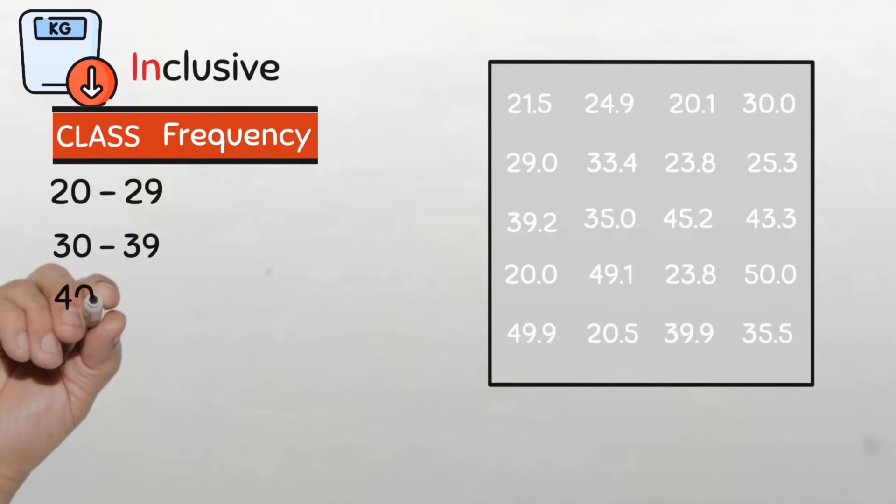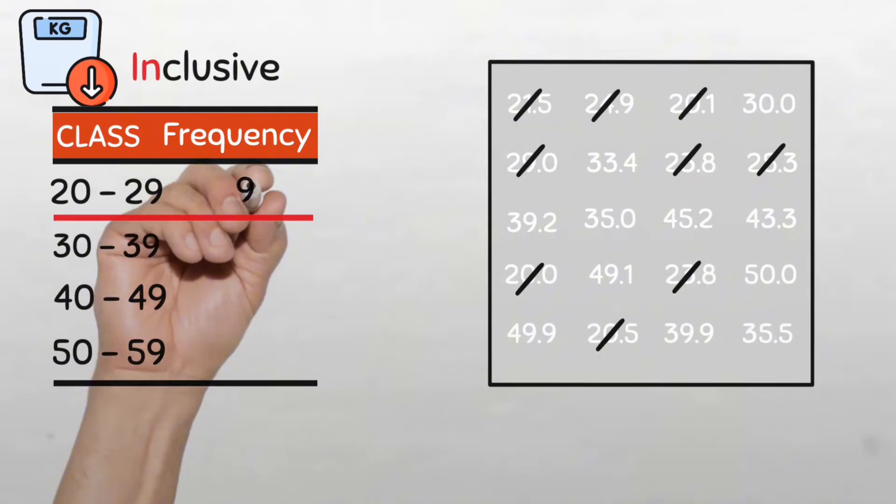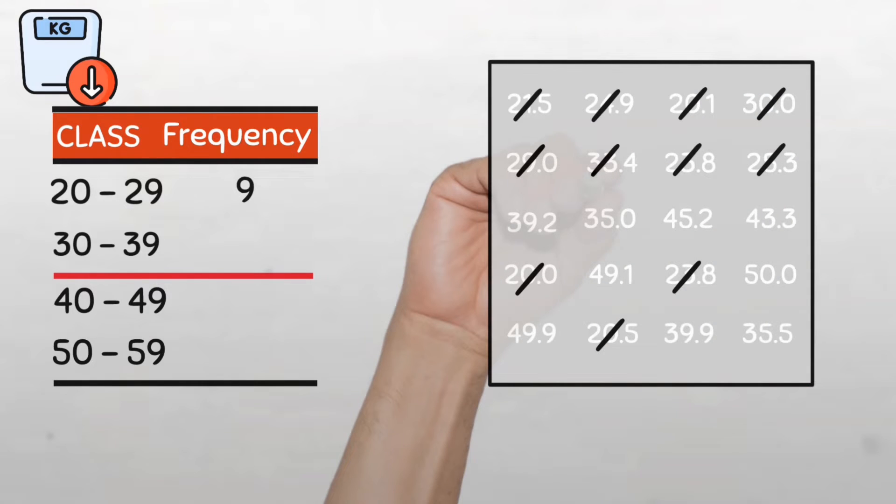So say we have the first class as 20 to 29, the next as 30 to 39, and 40 to 49 as well as 50 to 59 kg. And we will begin our count as usual. For the first class of 20 to 29, we will count 21.5 as 1, 24.9 as 2, 20.1 as 3, 29.0 as 4, and then we have 5, 6, 7, 8, and 9. So we have 9 in the first class. Now for the next class, 30.0 will go, 33.4 will also go, and 39.2.